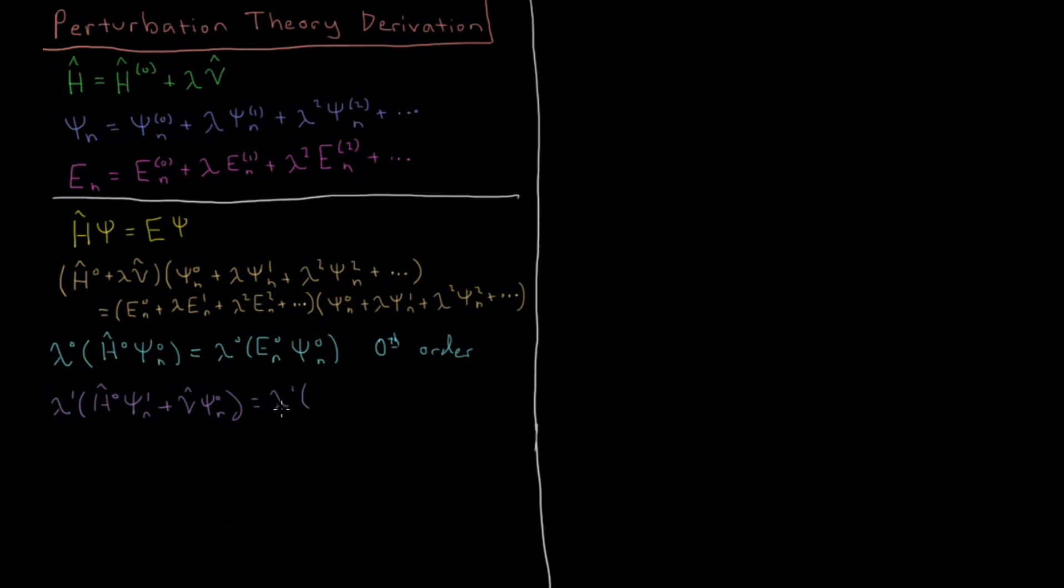Then let's look at the terms that are linear in lambda on the other side. That's going to be E0 times psi1, and there's going to be another term, which is going to be E1 times psi0. So if we divide both of these sides by lambda, then we'll just get H0 psi1 plus V psi0 equals E0 psi1 plus E1 psi0.